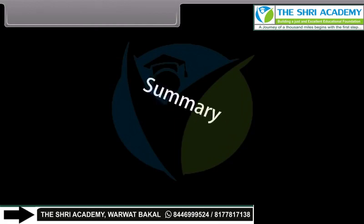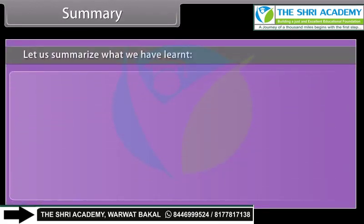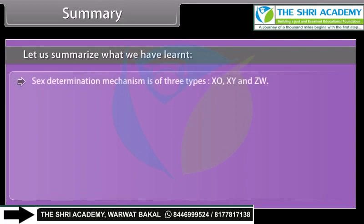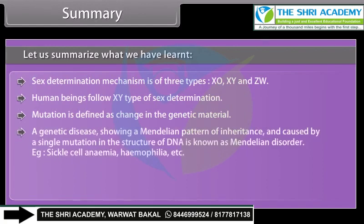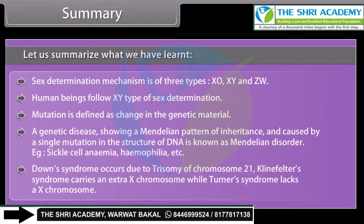Summary: Sex determination mechanism is of three types — XO, XY, and ZW. Human beings follow XY type of sex determination. Mutation is defined as a change in the genetic material. A genetic disease showing a Mendelian pattern of inheritance caused by a single mutation in DNA is known as a Mendelian disorder — examples include sickle cell anemia and haemophilia. Down's Syndrome occurs due to trisomy of chromosome 21, Klinefelter's Syndrome carries an extra X chromosome, while Turner's Syndrome lacks an X chromosome.